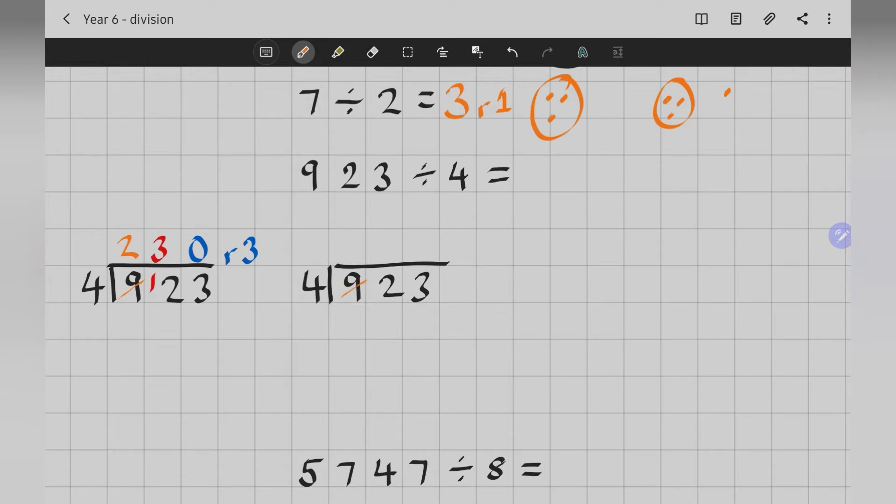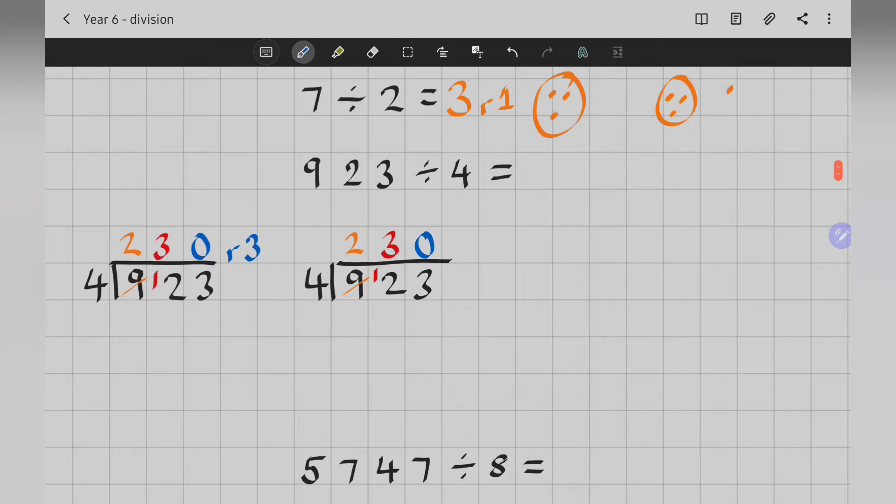923, and I'm dividing by 4. So, it went into 9 twice, with 1 left over. It went into 12 3 times, with none left over. But it didn't go into 3. It went in 0 times. This time, I'm going to show my answer as a fraction. My 3 remainders. I had 3 left over, which is fine.